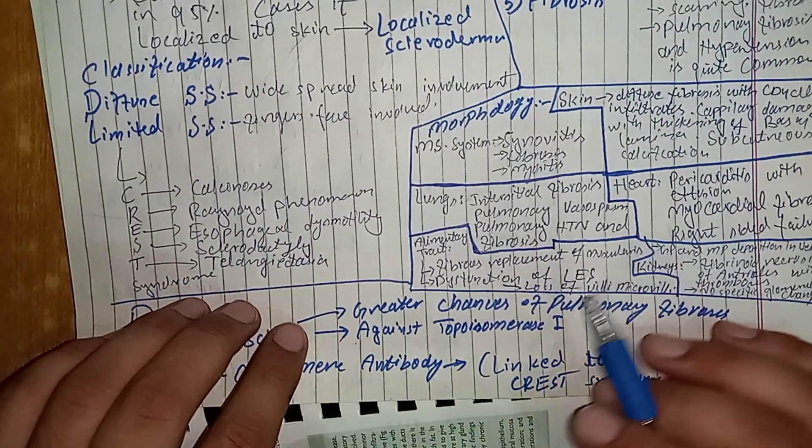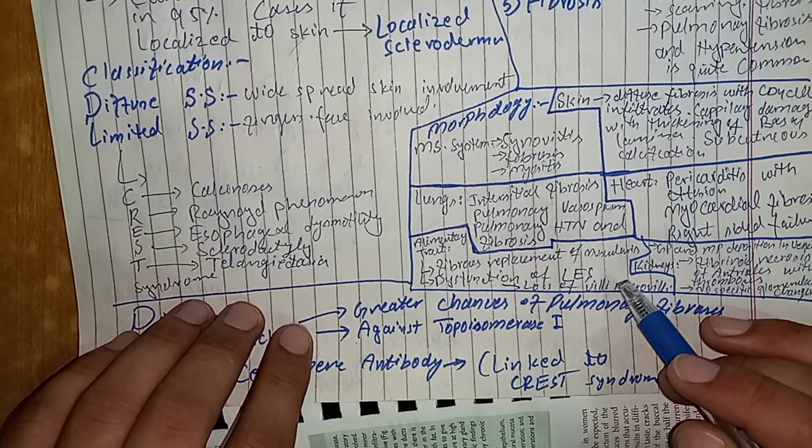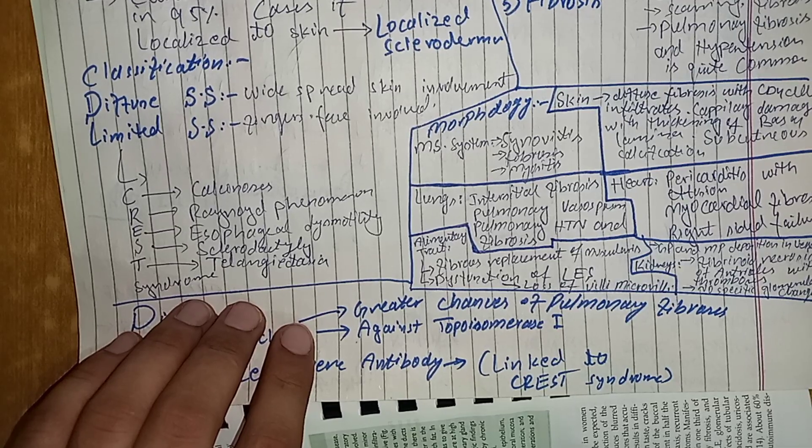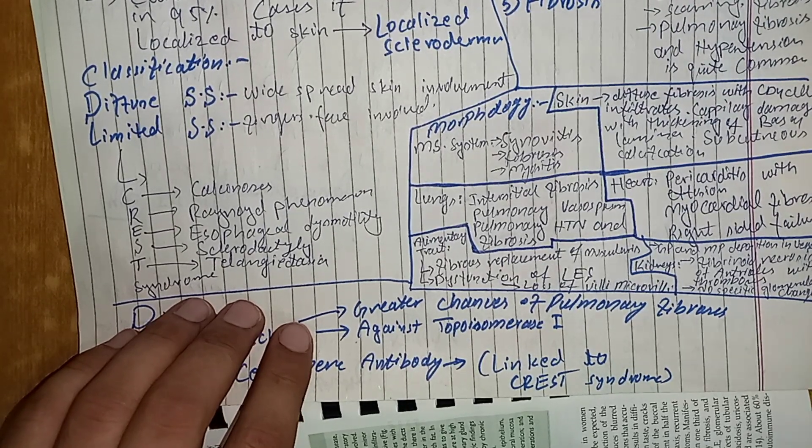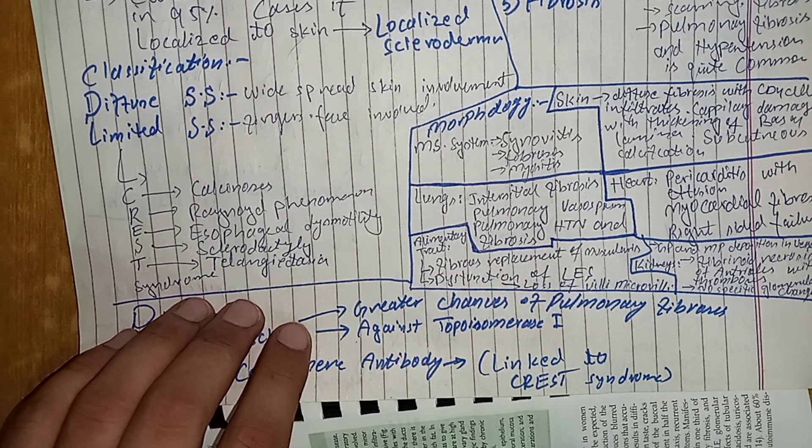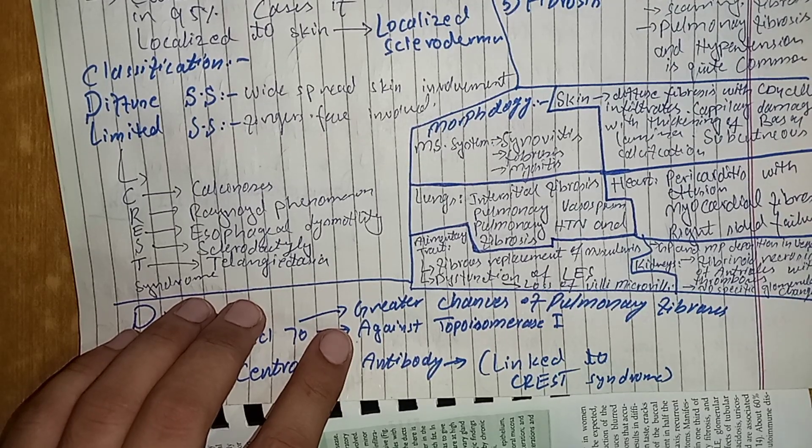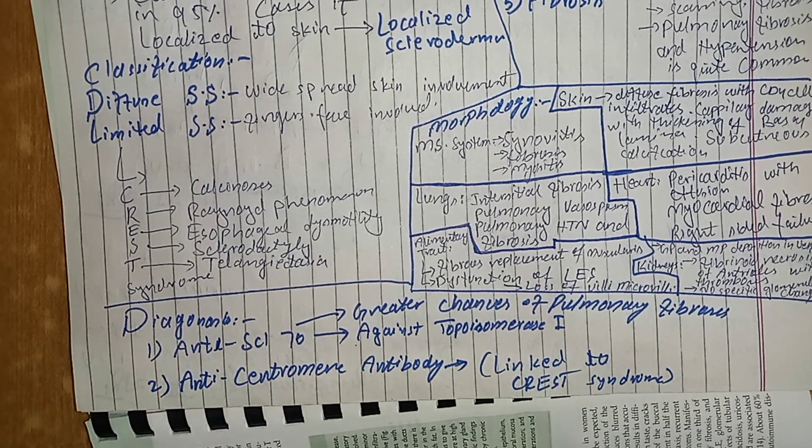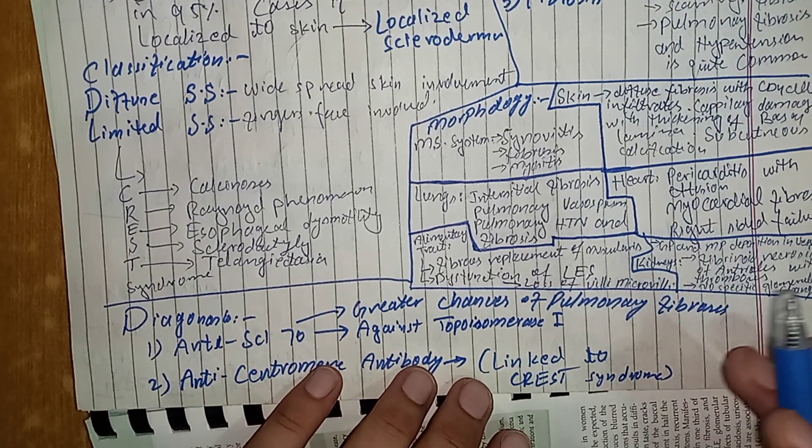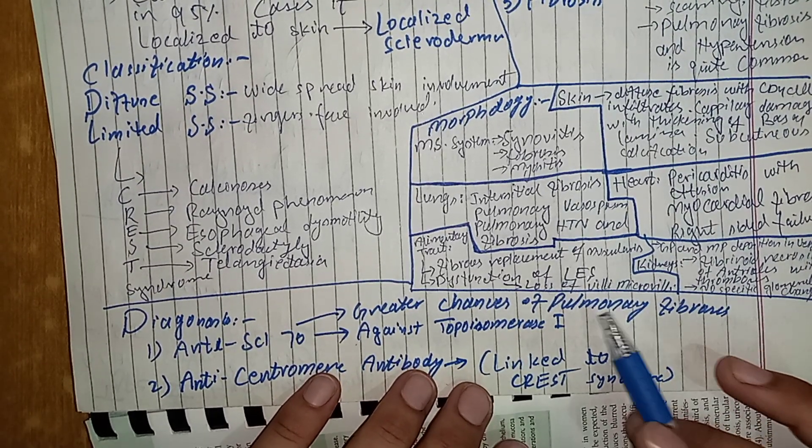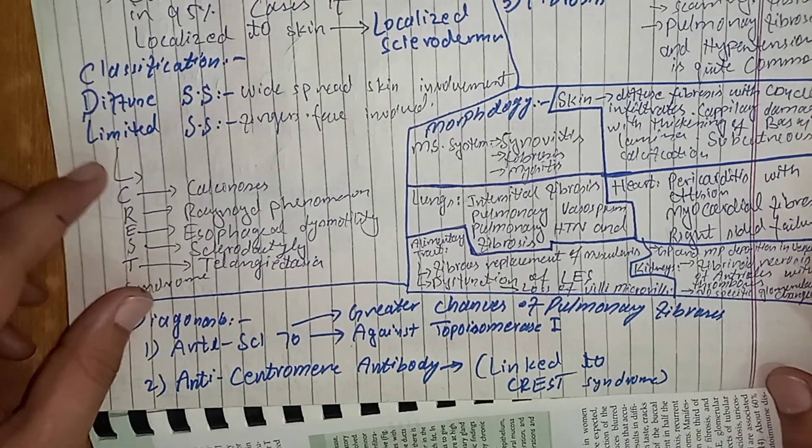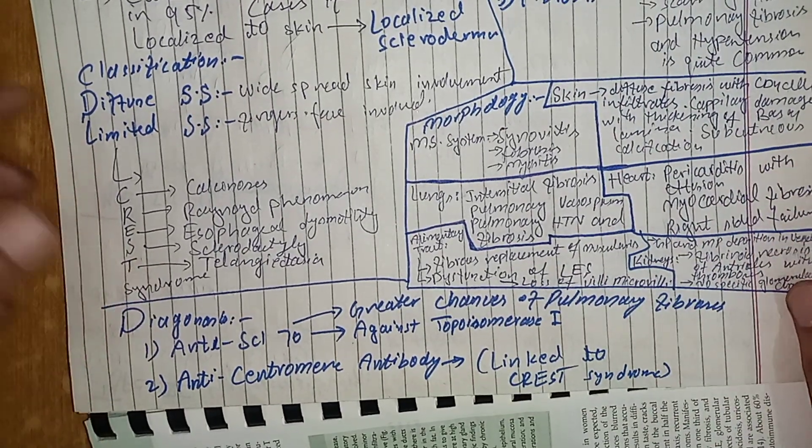And it also damages the alimentary tract. In alimentary tract, the muscularis layer of the alimentary tract is replaced by fibrous tissue. And when it is replaced by fibrous tissue, there is reduced gastric motility. There is reduced motility of the alimentary tract. And there is also dysfunction of the lower esophageal sphincter due to which esophageal dysmotility occurs. And there is loss of villi and microvilli due to which malabsorption syndrome also occurs. So, multiple body tissues are involved in this condition. And there is dysfunction of the multiple organ systems of the body.